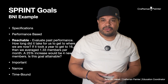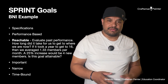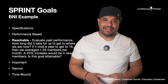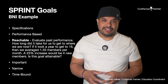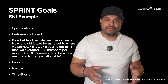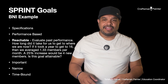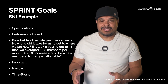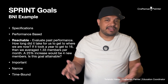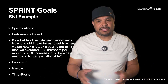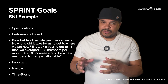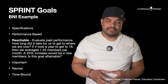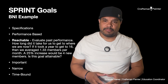The best way to figure out if your goal is reachable is to evaluate your past performance. How long did it take to get to where we're at now? If it took a year to get to 16 members, then we average 1.33 members per month, and a 25% increase would be four new members. We have to ask ourselves: is that attainable? We always want to make sure our goals are reachable based on past performance.